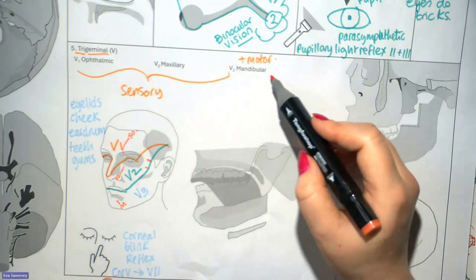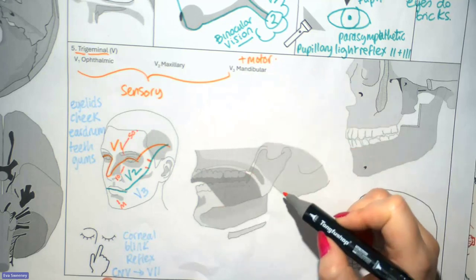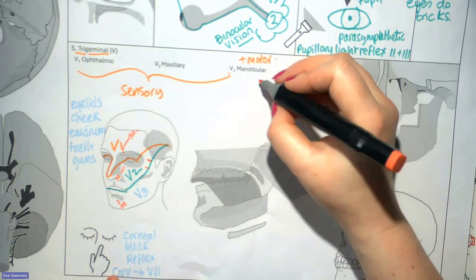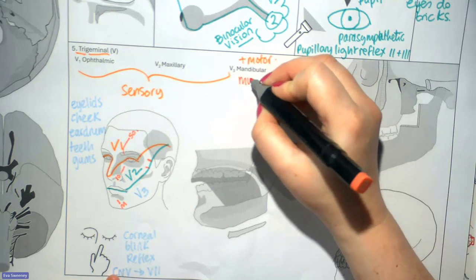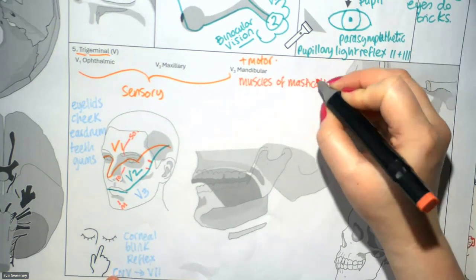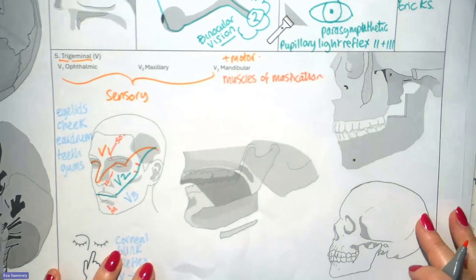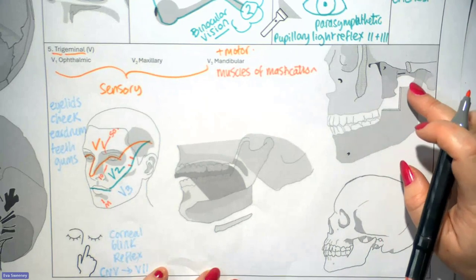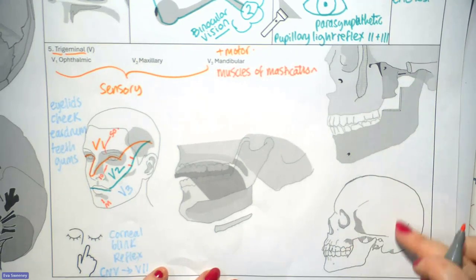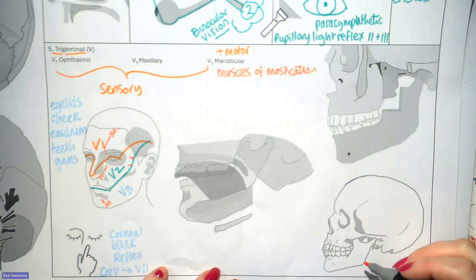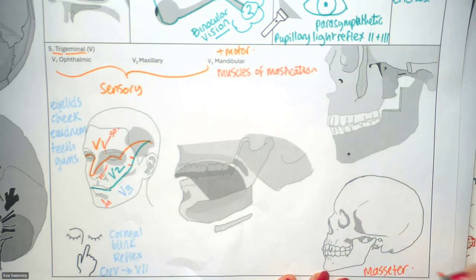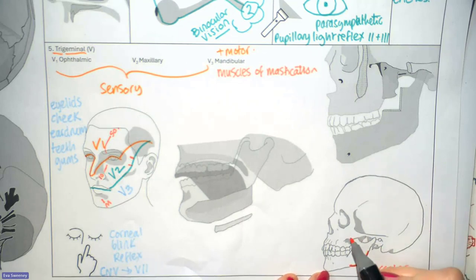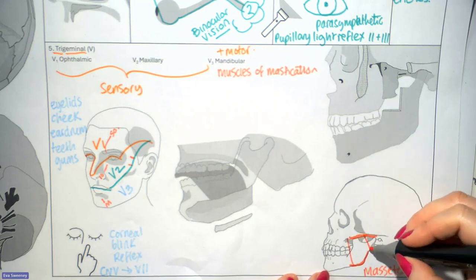Another function of the V3 division is motor innervation, most associated with the muscles of mastication — the muscles that allow you to chew. Drawing onto the diagrams, we have the two pterygoid muscles and the two more superficial ones: the masseter and the temporalis. The masseter attaches at the angle of the mandible and on the zygomatic arch.